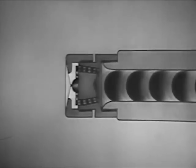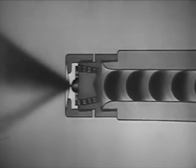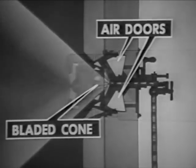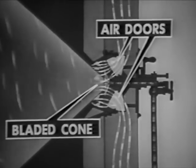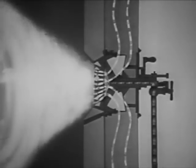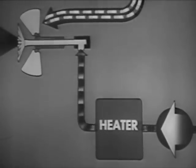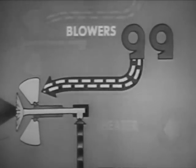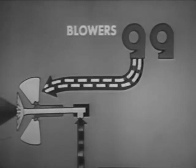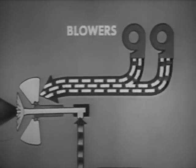In burners with mechanical atomizers of the pressure type, the sprayer plate atomizes the oil, heated and under pressure. The register gives the blast of air from the blower a rotating motion and mixes the air with the oil. You vary the pressure on the oil supply line to control the amount of oil entering the furnace. To control the amount of air entering the furnace, you vary the speed and number of the forced draft blowers.